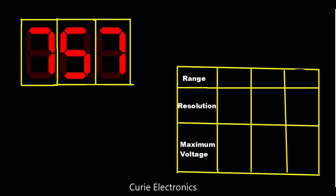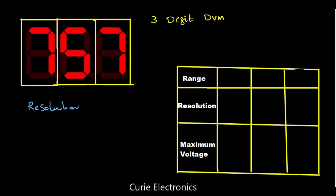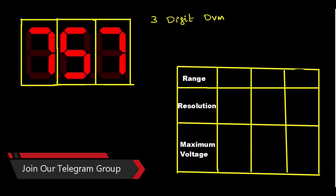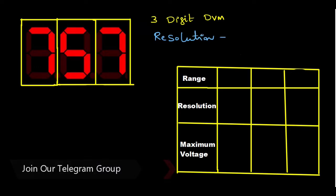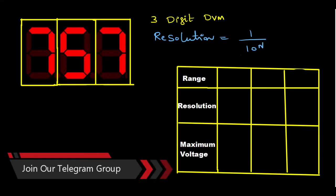This is a three digit DVM — three full digits. If there is no half, that means these three digits are full digits. The resolution is given by the formula: Resolution equals 1 upon 10 to the power n, where n is the number of full digit displays.